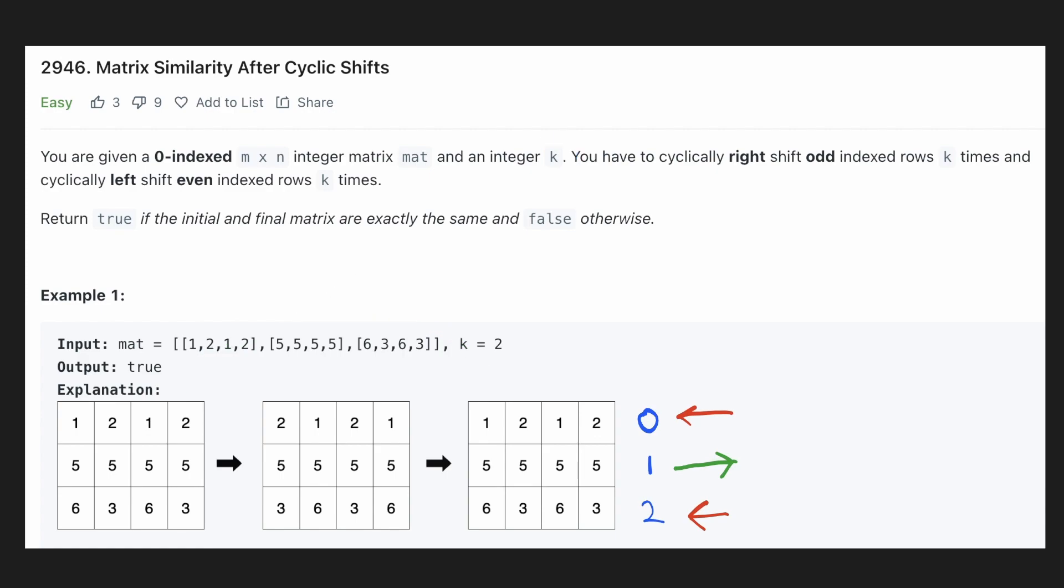The very obvious solution that first comes to mind is that for each element in the matrix we'll rotate it k times and since we'll be modifying our matrix in that case we'll keep a copy of the original matrix and then compare with it.